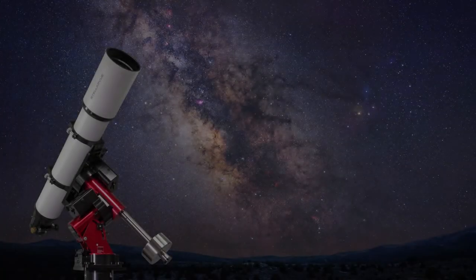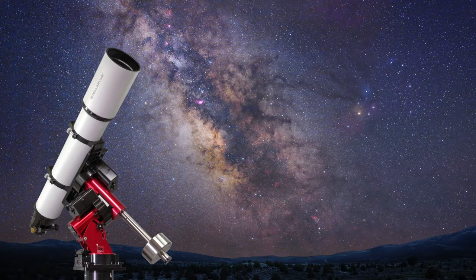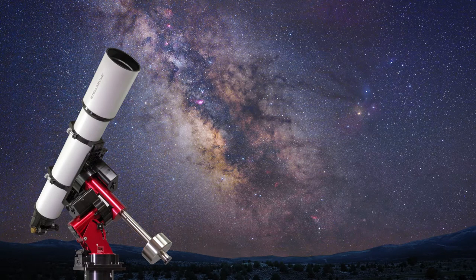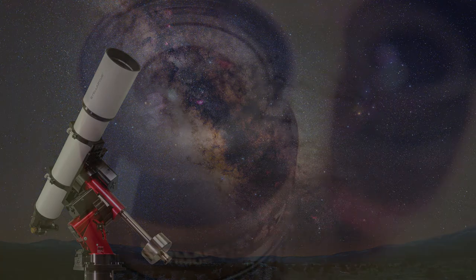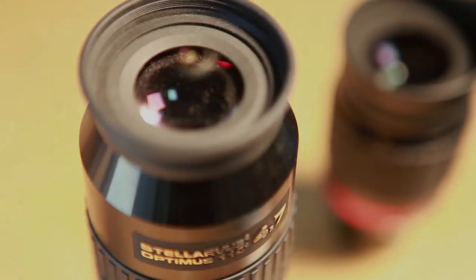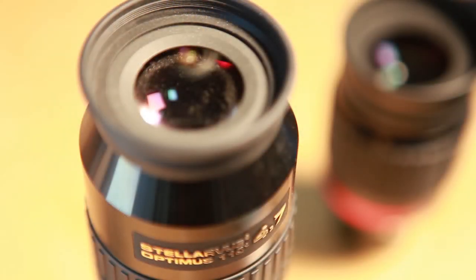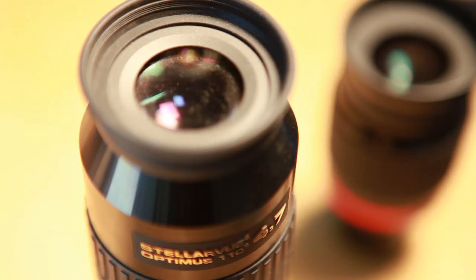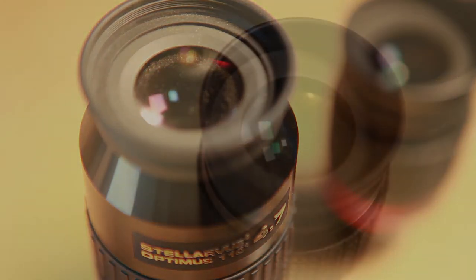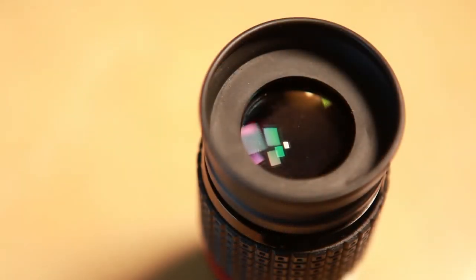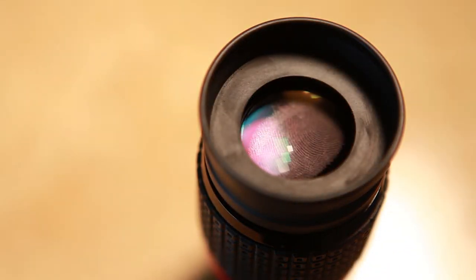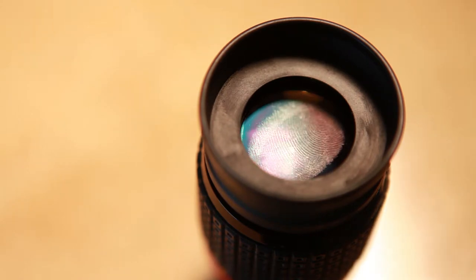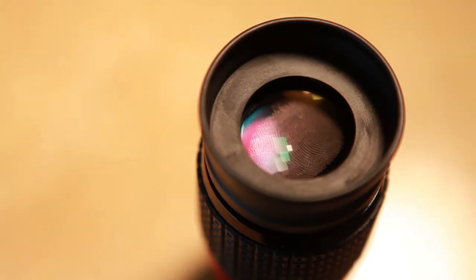Even with tender loving care, eyepieces are used outside and attract dust and dew. They're also handled quite a bit, so they do get dirty. And when they're dirty, they should be cleaned. Also, mistakes can happen, and should you accidentally touch one of the optical surfaces of your eyepiece or your objective lens on your telescope, it should be cleaned right away.